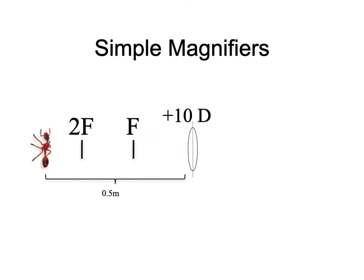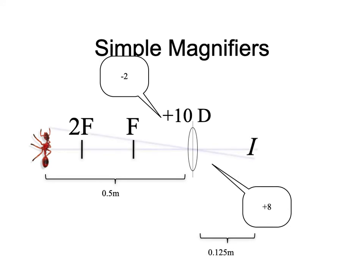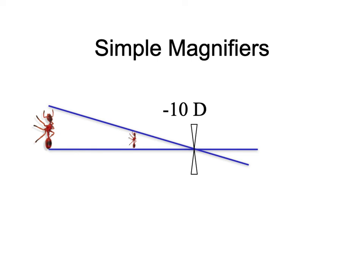If the object is beyond 2F — say half a meter — vergence minus 2 in, plus 8 out, image at an eighth of a meter. That image is real, inverted, and minified. Summary: between F and lens — magnified, virtual, upright; between F and 2F — magnified, real, inverted; beyond 2F — minified, real, inverted. For minus lenses, always upright, virtual, and minified.